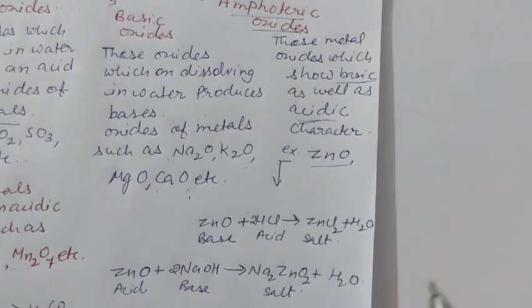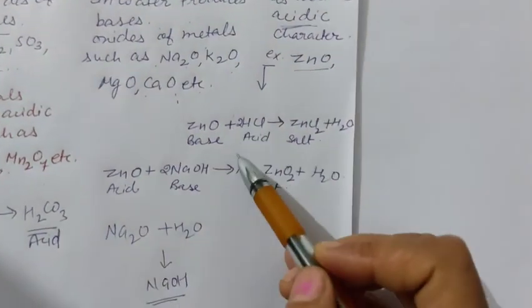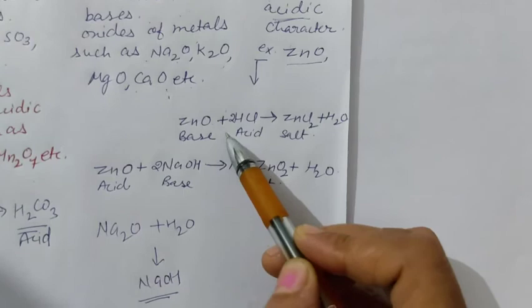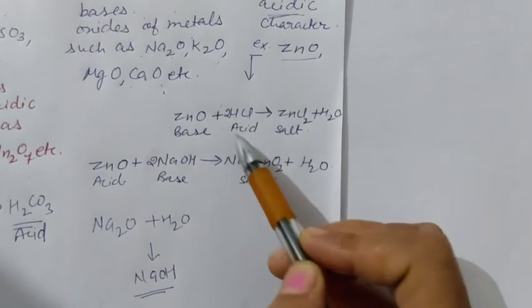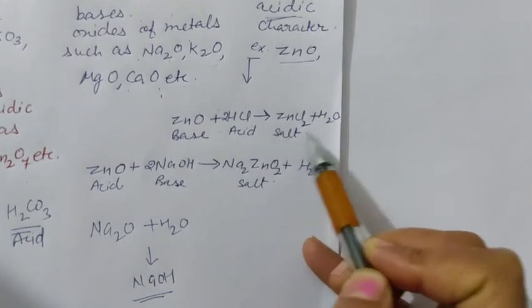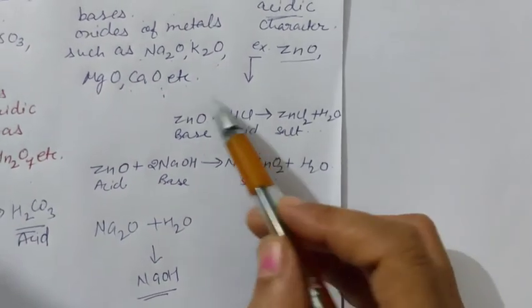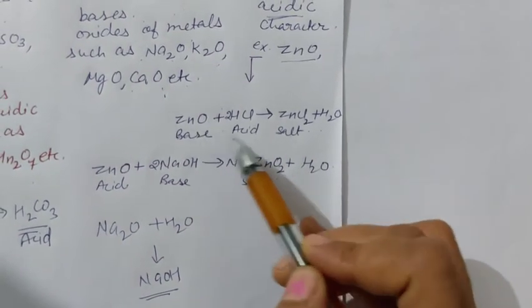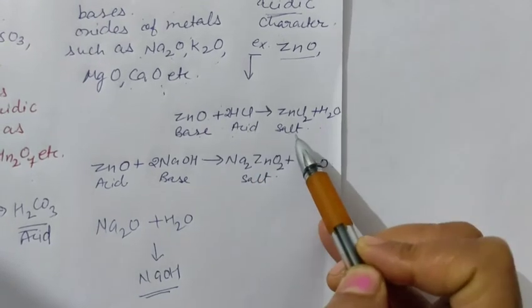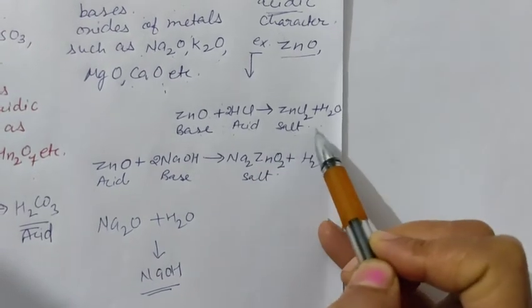For example, zinc oxide. Here you can see the reaction when zinc oxide reacts with HCl which is an acid, it forms salt and H2O.